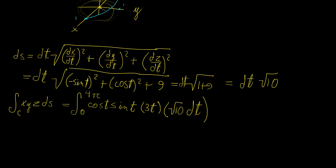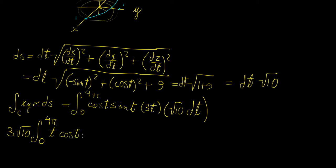We take the constants out, giving us 3 times square root of 10 times the integral from 0 to 4π of t times cosine t times sine t dt.